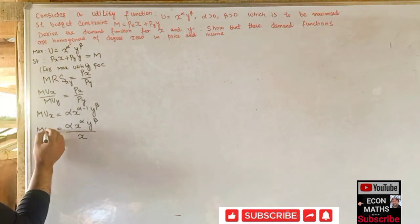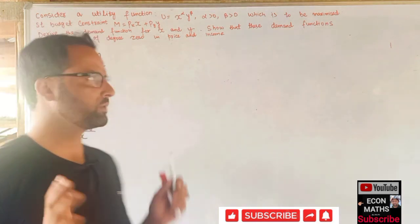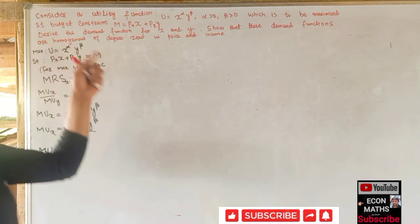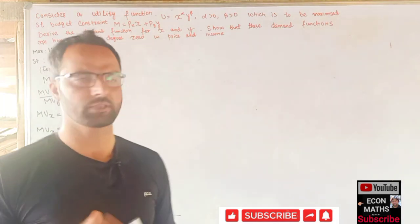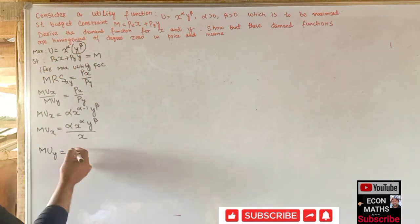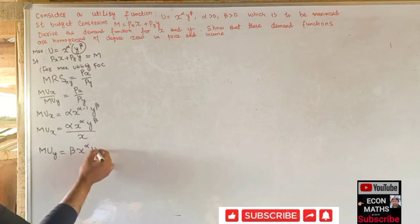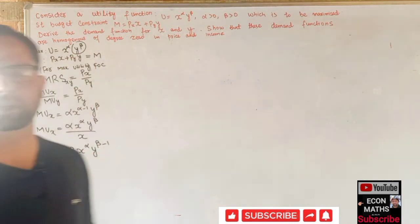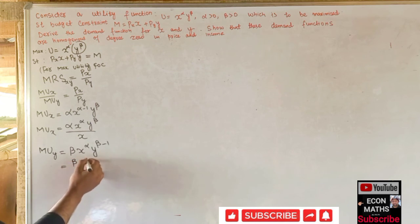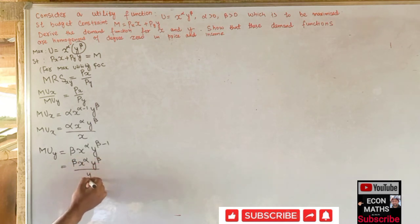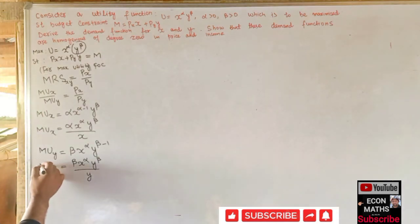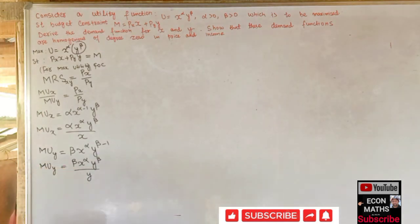Similarly, marginal utility of y is found by differentiating the utility function with respect to y. This gives β * x^α * y^(β-1), and we can rearrange this as β * x^α * y^β divided by y, since y^(-1) equals 1/y.